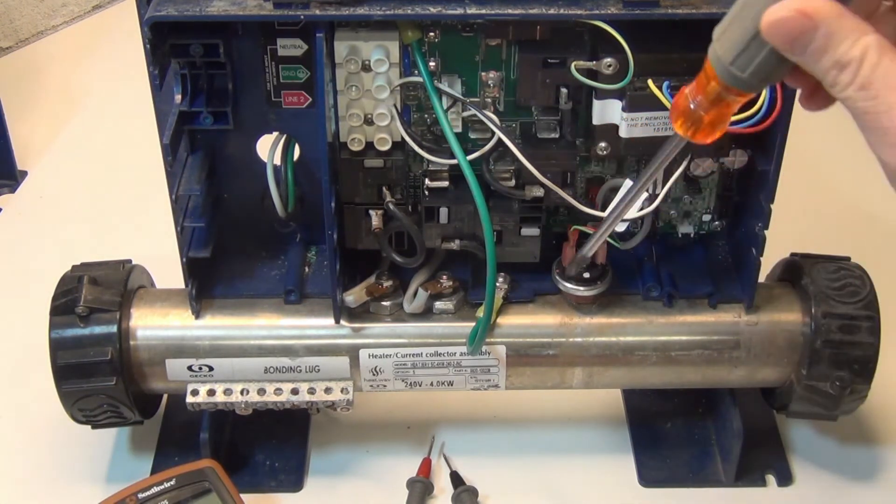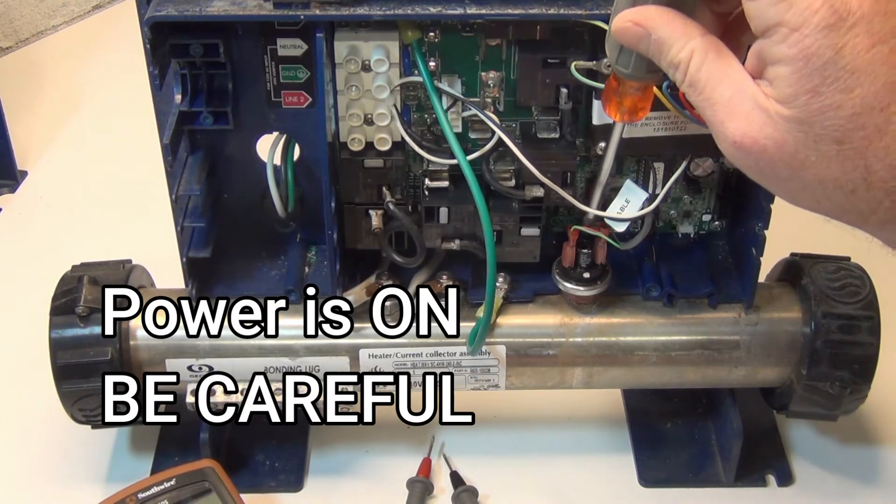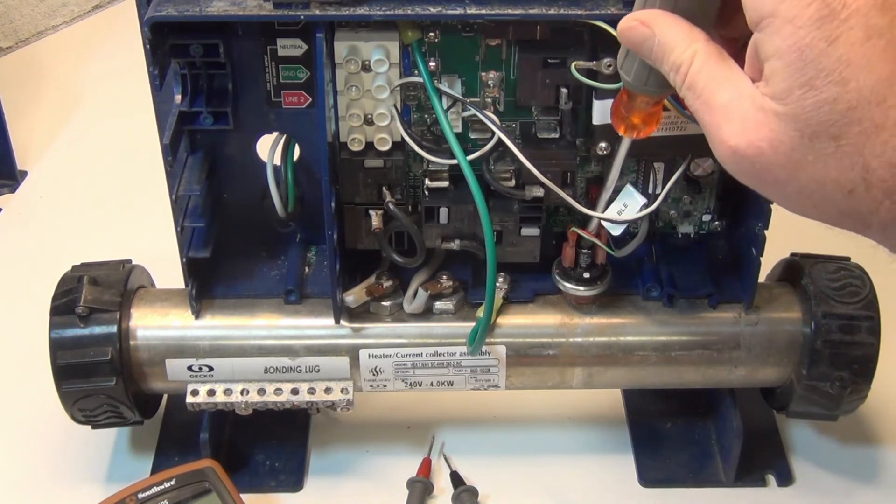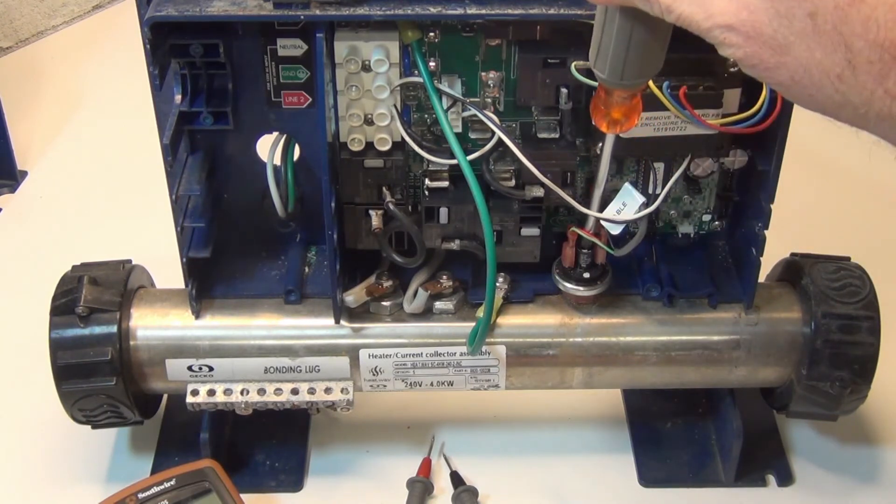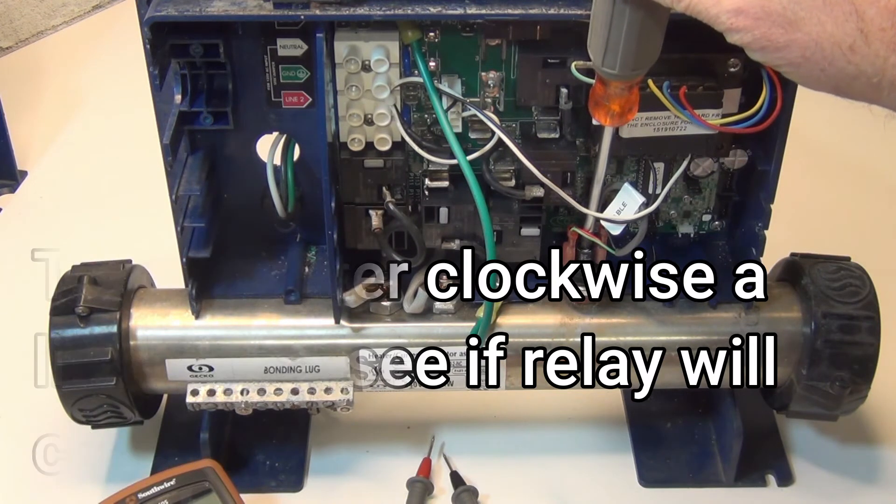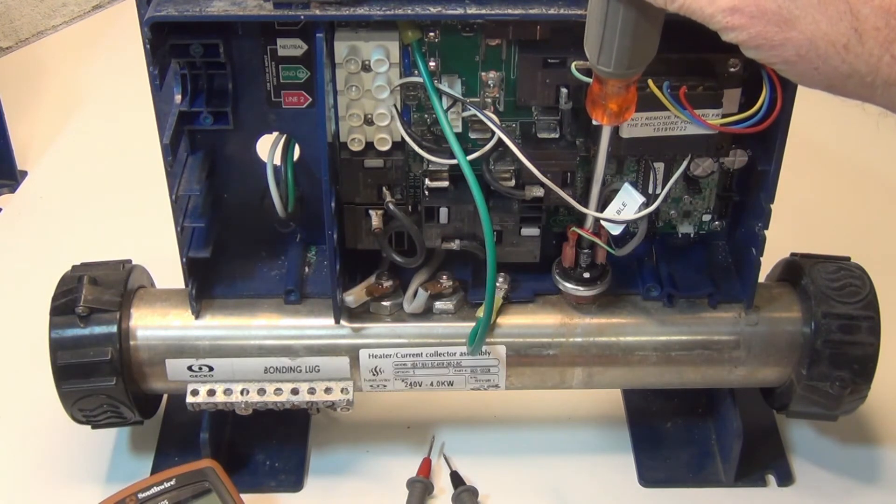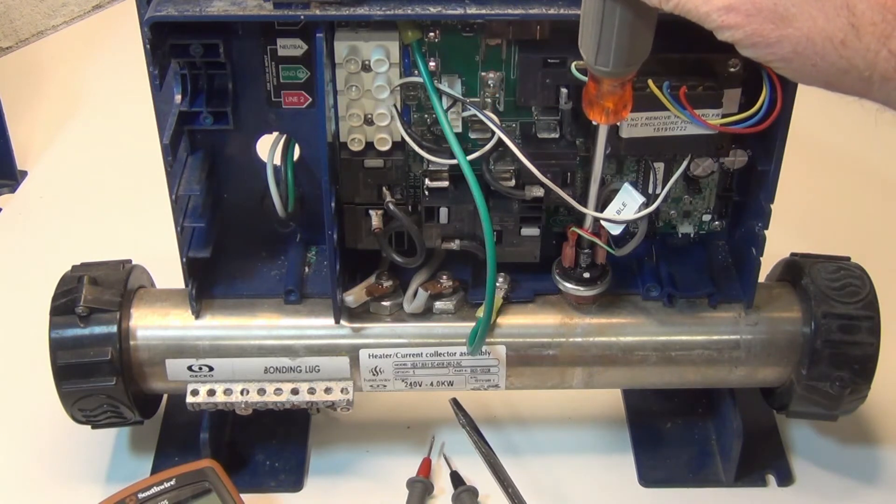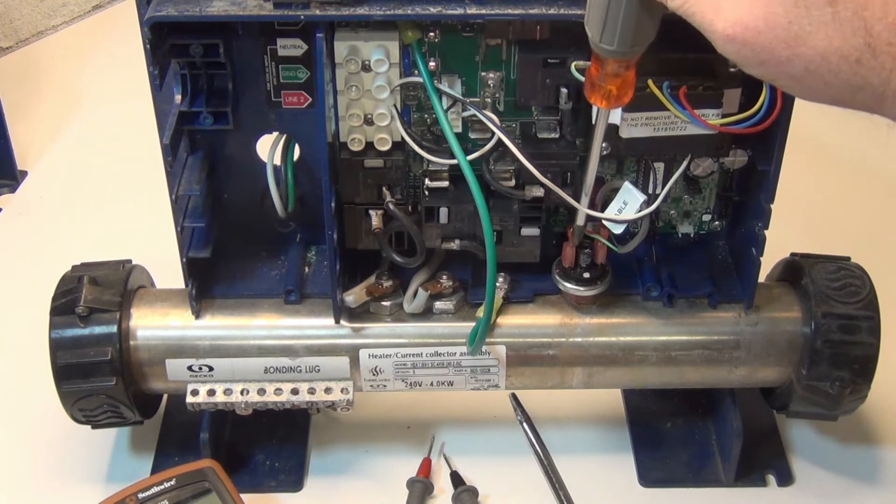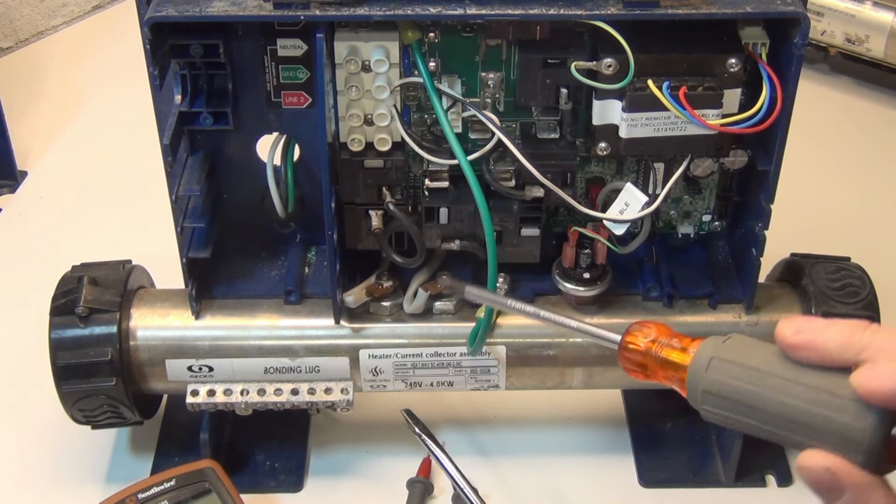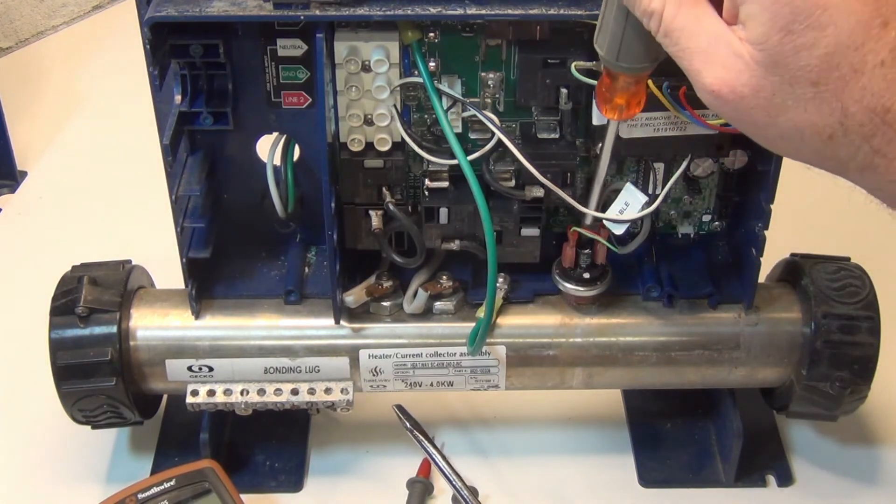This particular one you can get a Phillips screwdriver and not touching anything, you get right through the top there and twist it counterclockwise just a little bit at a time. You don't want to go too far. The most you want to go is maybe half a turn. You're listening for a click on one of these relays.